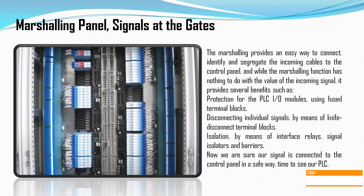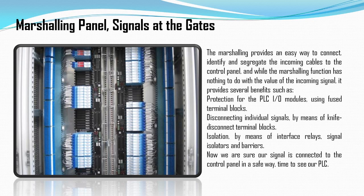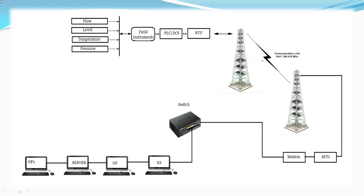The input module is needed because signals coming from the field — such as 4 to 20 milliamperes for analog signals like temperature, pressure, and level — must be converted. For digital signals, it would be 0 or 1, yes or no. The PLC only understands digital data — zeros and ones. So analog signals must be converted to digital format, and that is the main purpose of the input module: analog-to-digital conversion.